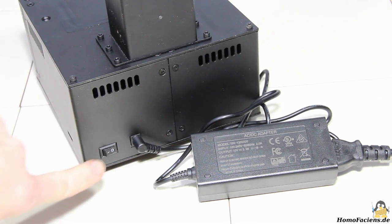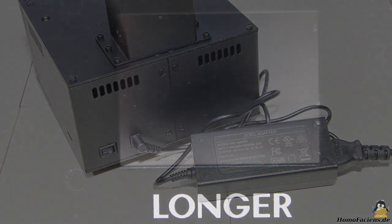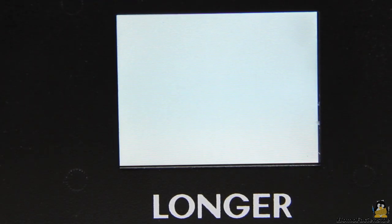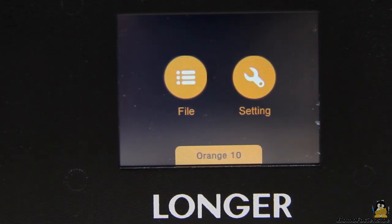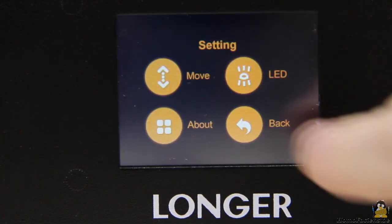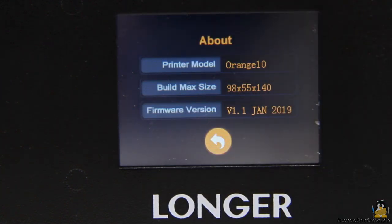After turning the printer on, the main menu appears on the 2.8 inch touch screen on the front of the device, which often requires a second or third attempt before reacting to inputs. The fan makes a really audible sound and since it is not temperature controlled, the loud background noise remains constant during operation.